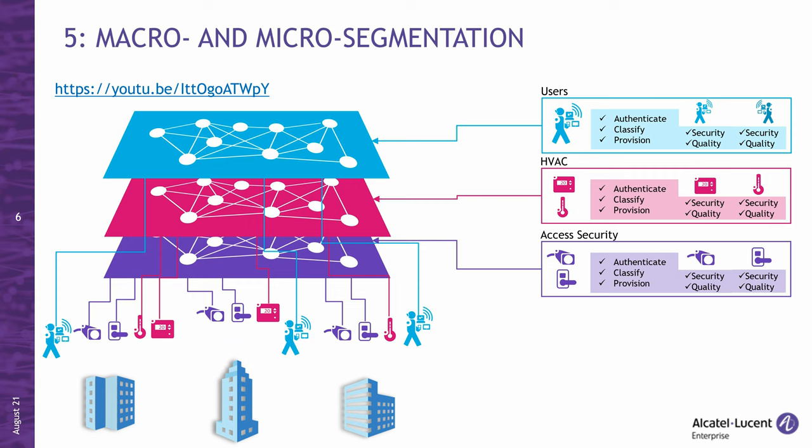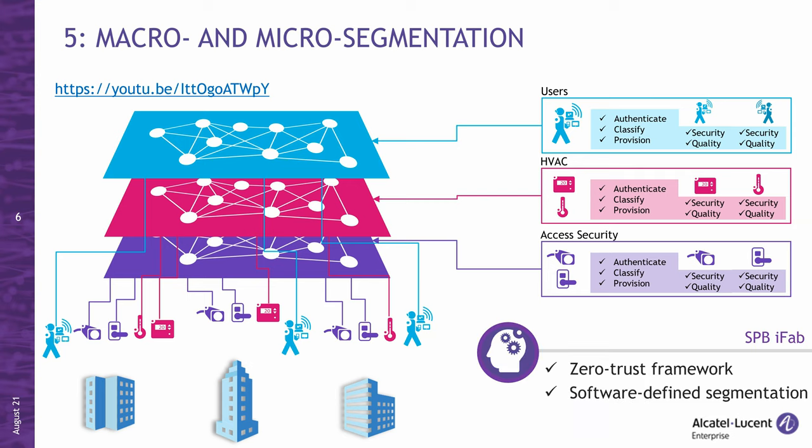Number five: SPB is an ideal solution for macro and micro segmentation. First, because it makes it really easy to create virtual segments for different user communities or device types without increasing operational complexity. And second, because it's fully integrated with AccessGuardian, which is the Network Admission Control framework, such that mapping of users or devices to their segment can be dynamic and policy-driven. In short, SPB makes it easier to adopt a zero-trust framework based on software-defined segmentation.